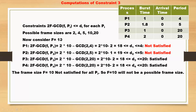Now consider f=10. For P1: 2×10 minus GCD(10,4) = 20 minus 2 = 18, which is not less than or equal to D1=4. Once again not satisfied. We shall not proceed with further computation. Frame size f=10 is not satisfied for all Pi, so f=10 will not be a possible frame size.